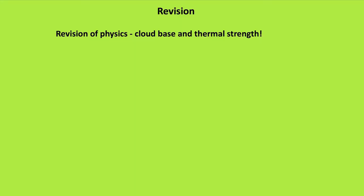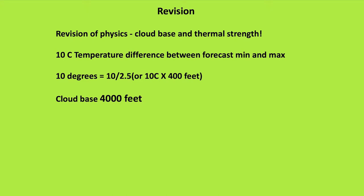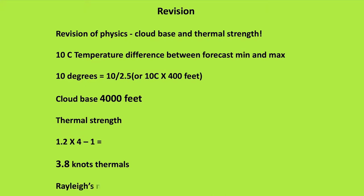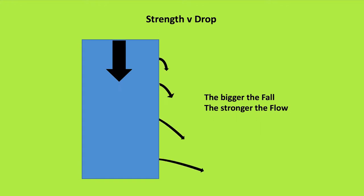Revision then of physics, cloud base and thermal strength. With a 10-degree temperature difference between forecast minimum and maximum temperature, we have a cloud base of 4,000 feet, and the thermal strength becomes 3.8 knots. Rayleigh's number — why does that happen? The strength is dependent on the drop. Here we have a column of water with a tank with holes in it, and we can rapidly see that the further it falls, the greater the pressure, and the greater the flow of water out of the bottom compared to the top.